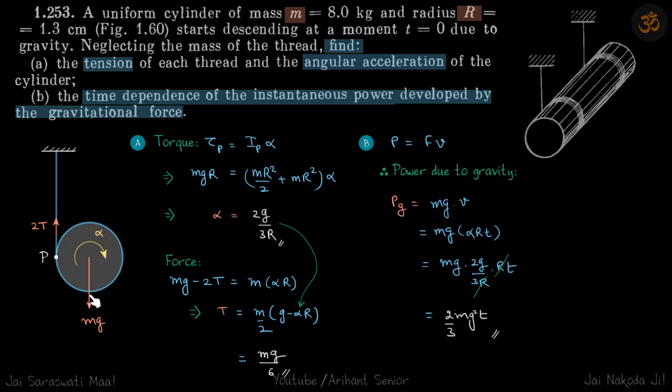find the velocity of center of mass. That will give us the power F·v. F will be mg and v, because we know the acceleration, will be simply a·t, and a will be alpha·R. So we put the value of alpha here and get our answer.